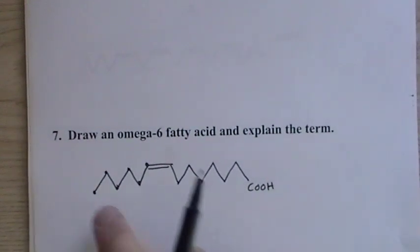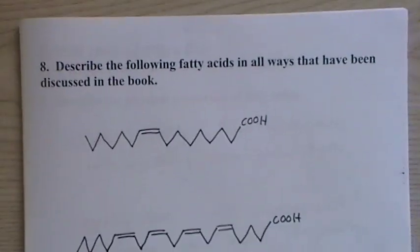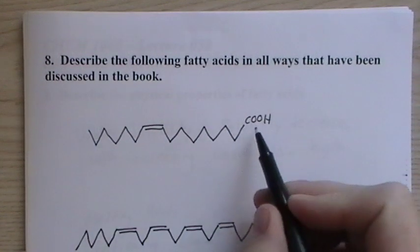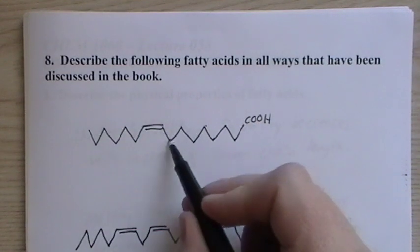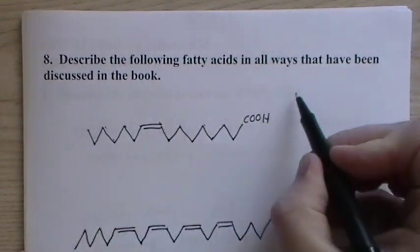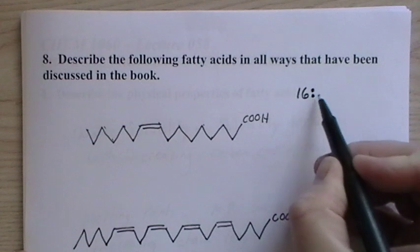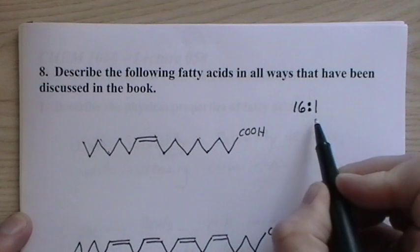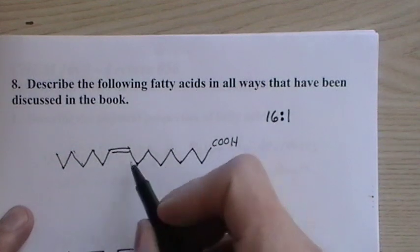Now describe the fatty acids in all the ways that have been discussed in the book. When you have the fatty acid, aside from the oxygens here, it's just carbon and hydrogen. If we count up the carbons—one, two, three, four, five, six, seven, eight, nine, ten, eleven, twelve, thirteen, fourteen, fifteen, sixteen—there's 16 carbons, and there is one double bond. So we could call this 16:1 to indicate that there's 16 carbons and one double bond in that fatty acid.